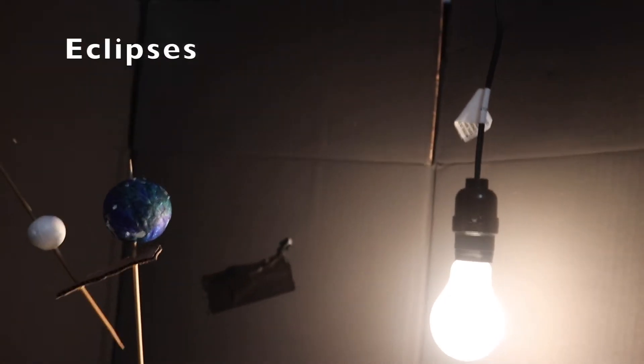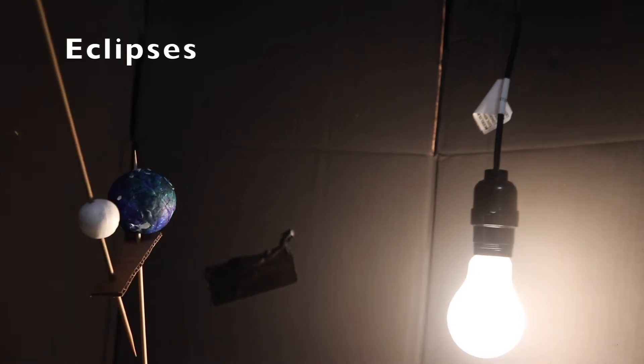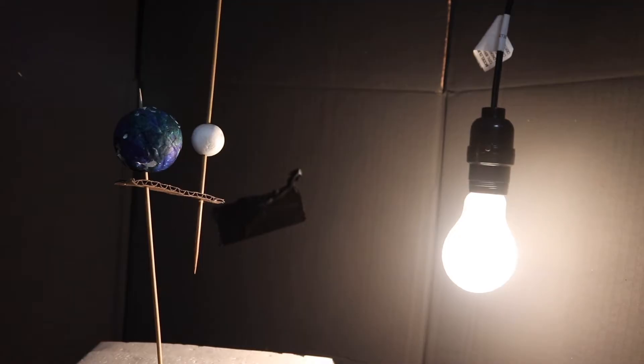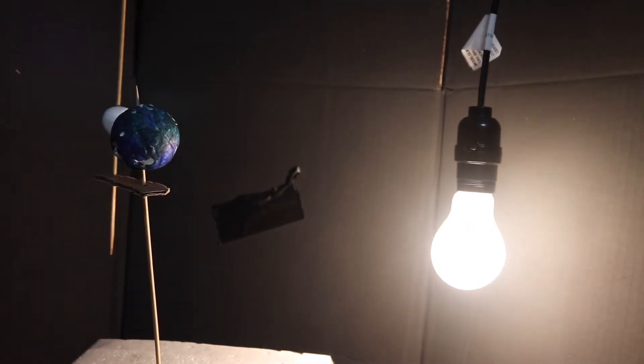The next thing we will go over is what and why eclipses occur. An eclipse is an astronomical event in which the moon will either go in front of or behind the Earth.